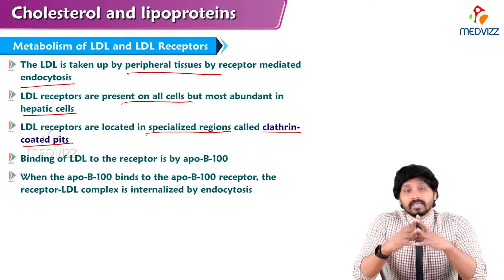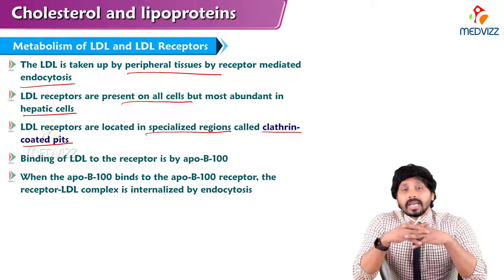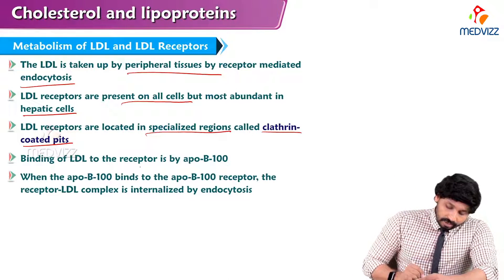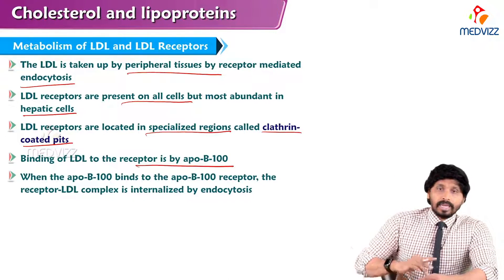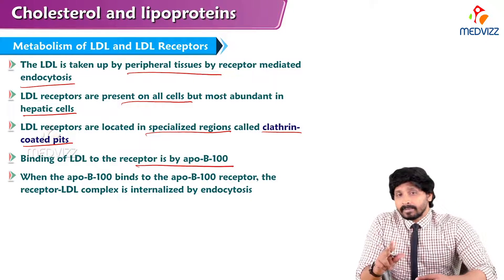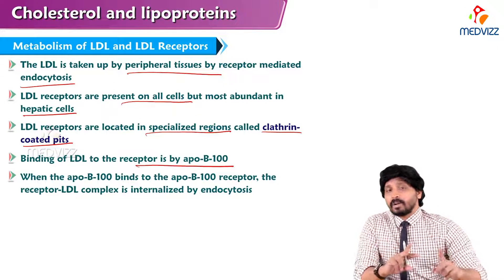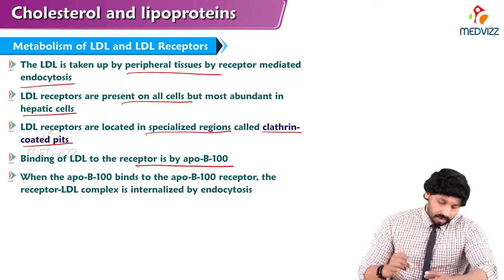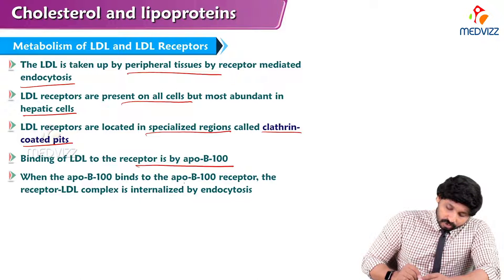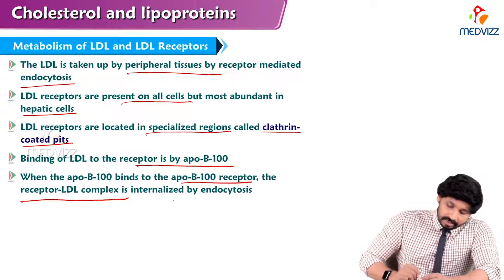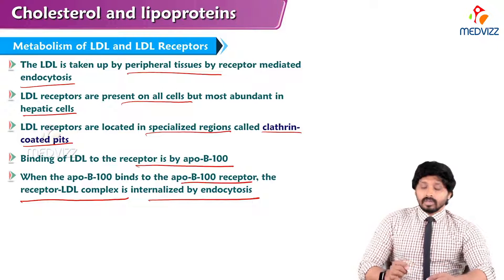LDL receptors are located in specialized regions called clathrin-coated pits, and binding of LDL to the receptor is by ApoB100. The receptor activity is mediated by ApoB100, but in case of chylomicrons, that activity is taken over by ApoE. When ApoB100 binds to the ApoB100 receptor, the receptor-LDL complex is internalized by endocytosis.